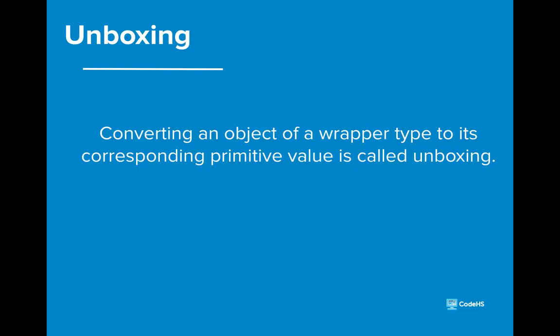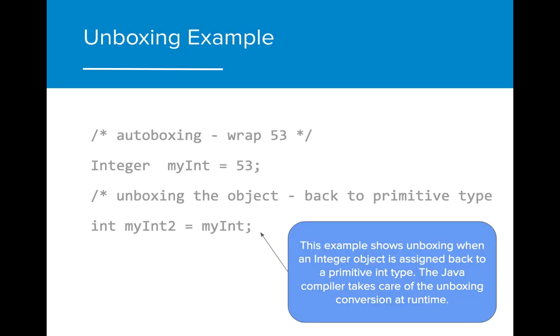Unboxing is the reverse of autoboxing. Unboxing is the automatic conversion that the Java compiler makes from the wrapper class to the primitive type. This includes converting an object Integer to a primitive int and an object Double to a primitive double. Instead of having to use the intValue method,